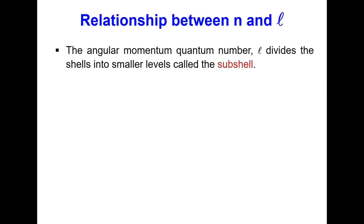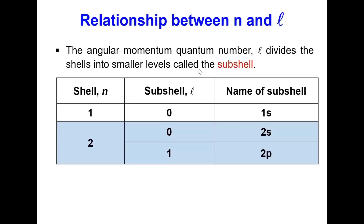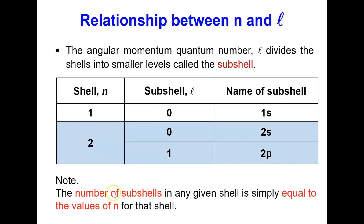The angular momentum quantum number L divides the shells (N) into smaller levels called sub-shells. For shell N=1, there is only one sub-shell, L=0, giving sub-shell 1S. For shell N=2, there are two sub-shells: L=0 giving 2S, and L=1 giving 2P. Note that the number of sub-shells in any given shell equals the value of N for that shell.